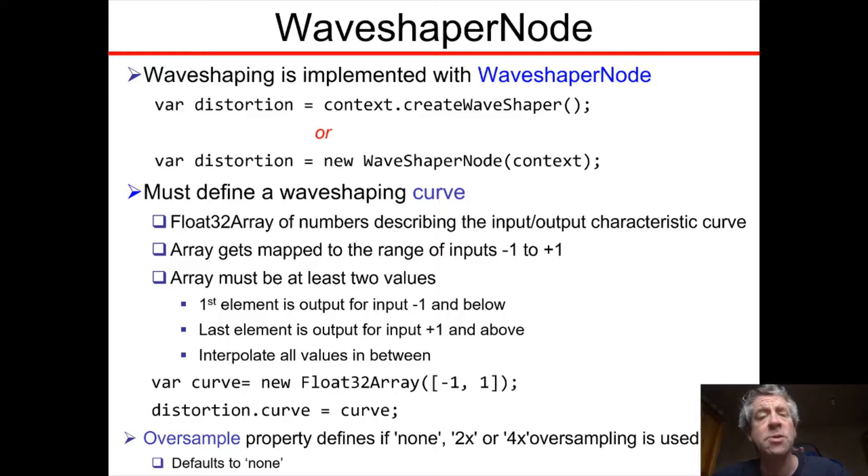It can be created in two different ways: either as a method of the audio context with context.createWaveShaper, or creating the node directly. New WaveShaperNode takes as input the context, and optionally the parameters can be set at that point as well.